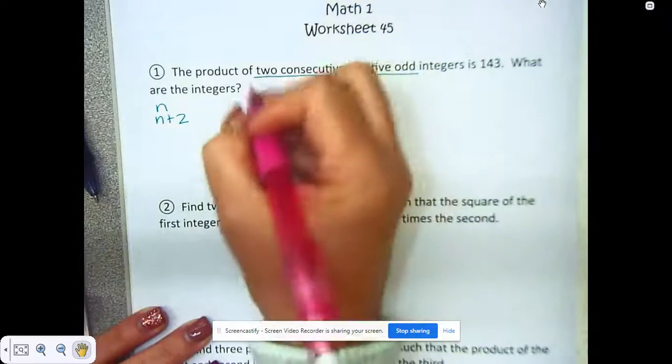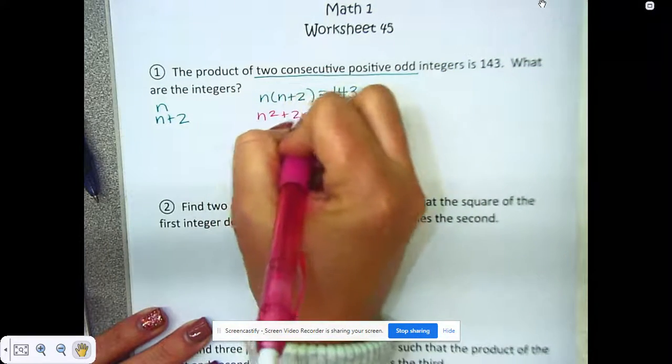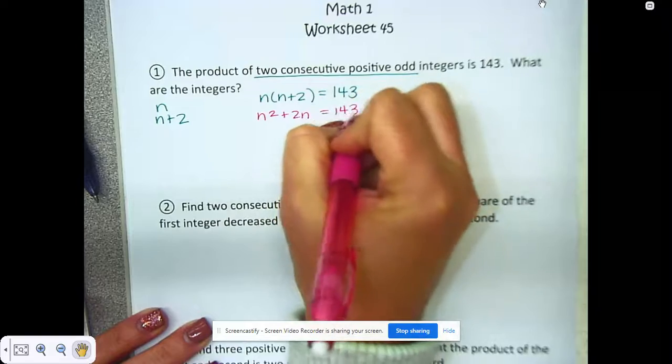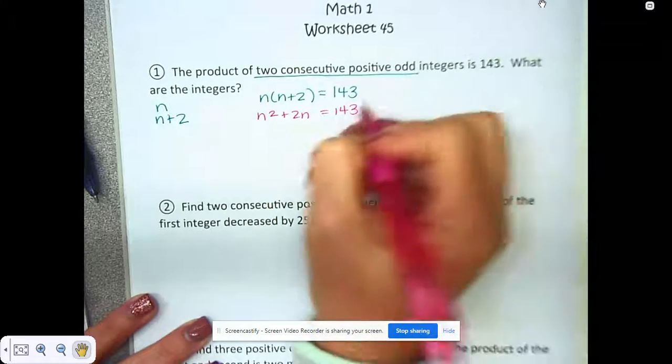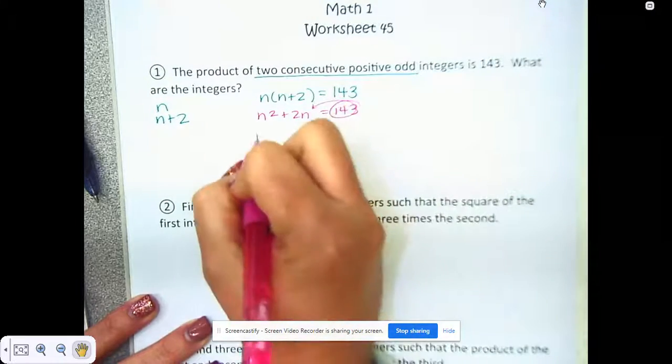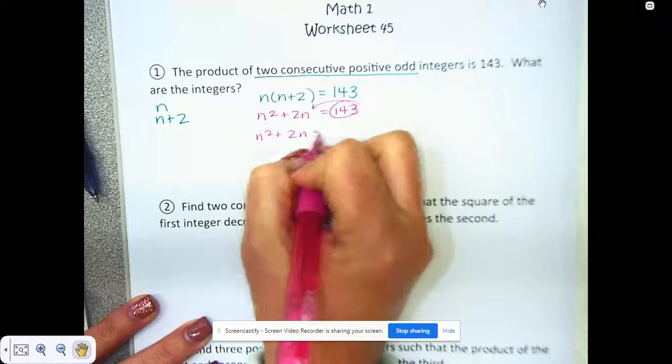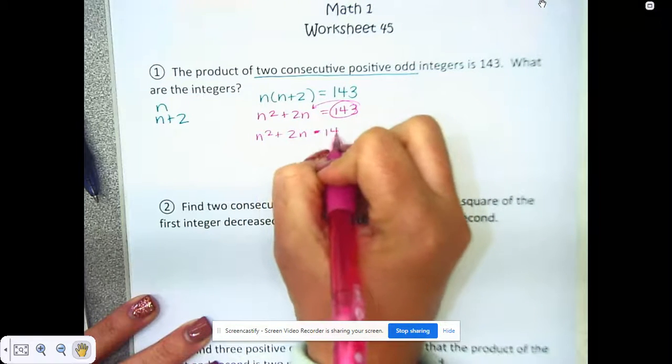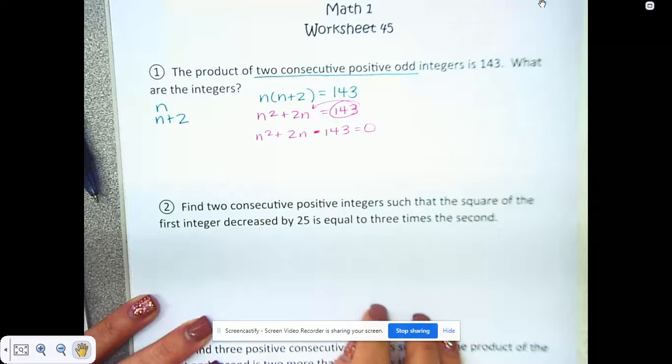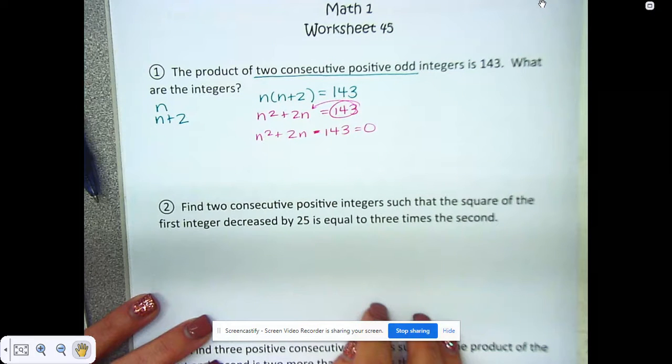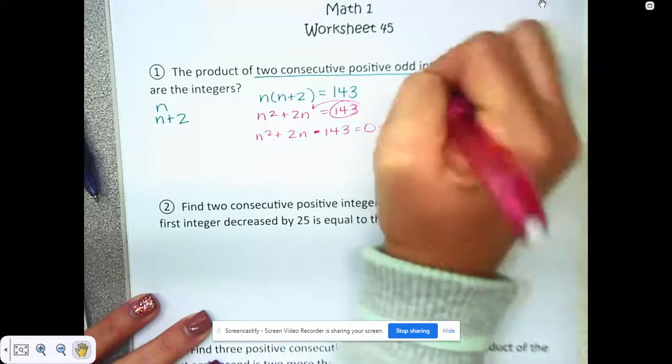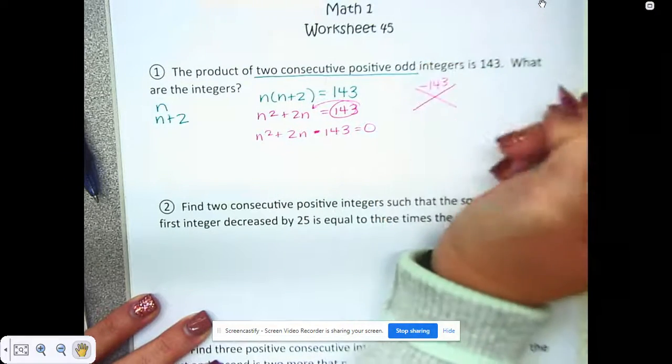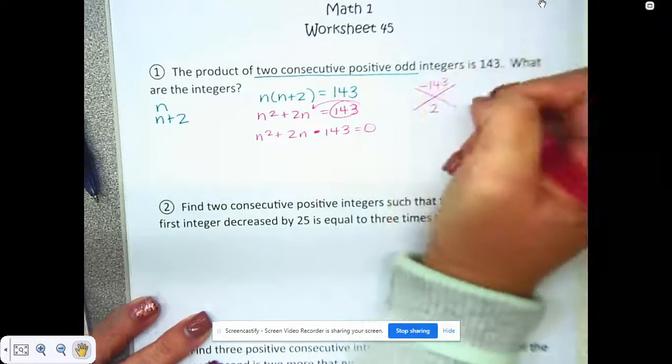We're going to distribute. We're going to move this over. From here, what we are doing is we are factoring. I'm still going to use my X-box with negative 143 and 2.